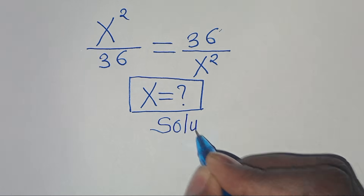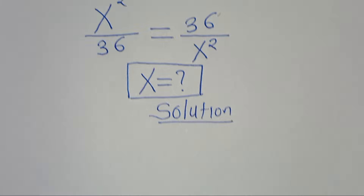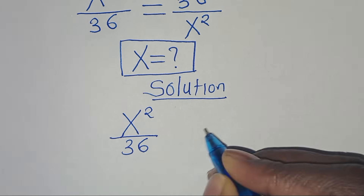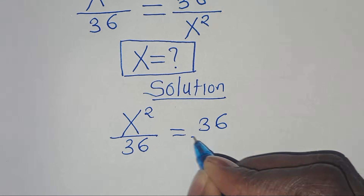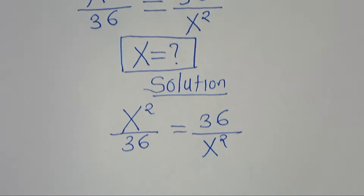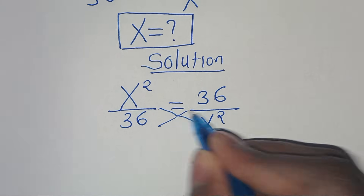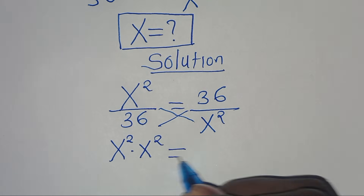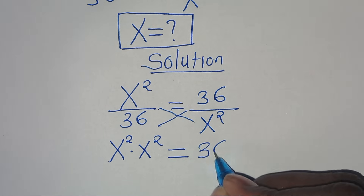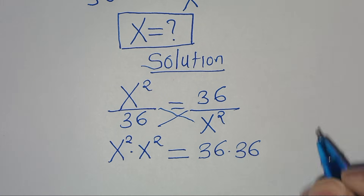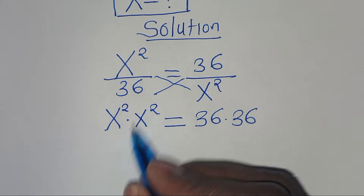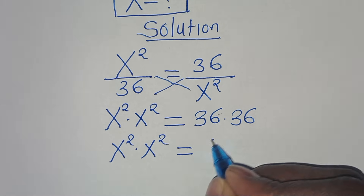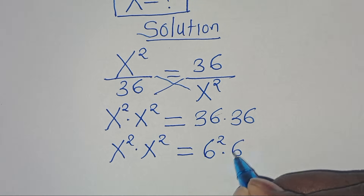Now let's provide a solution. We have x to the power of 2 divided by 36, this is equal to 36 over x to the power of 2. Let's cross multiply, so that we have x to the power of 2 multiplied by x to the power of 2, this is equal to 36 multiplied by 36. So this means x squared times x squared equals 36, which is 6 squared, times 6 squared.